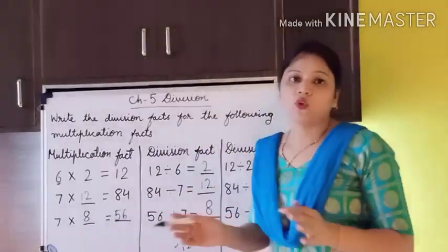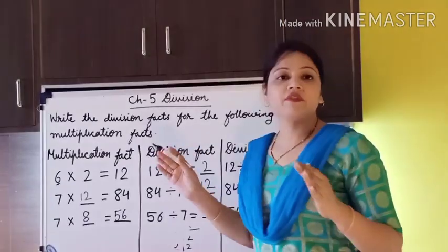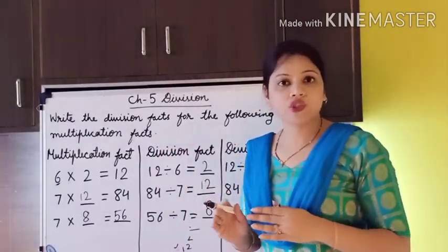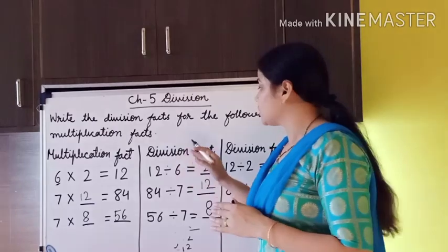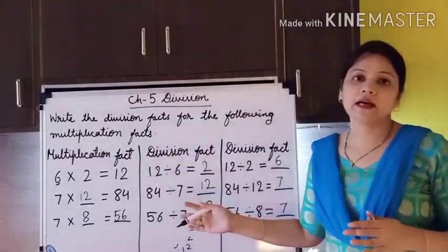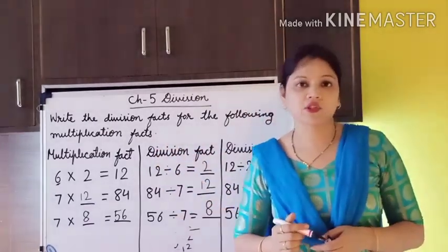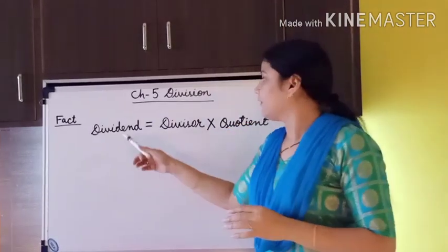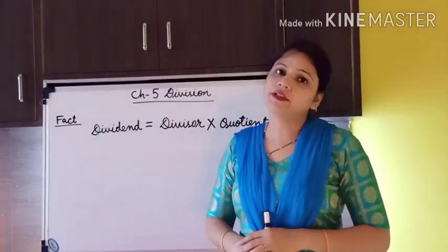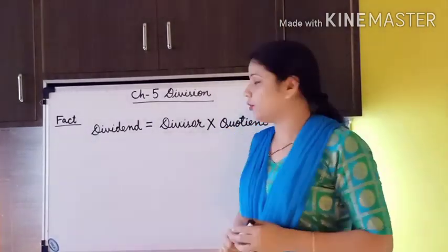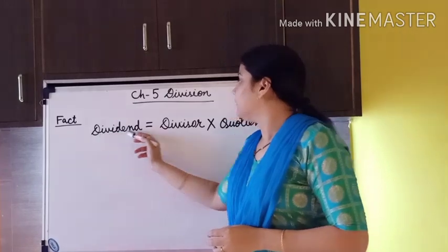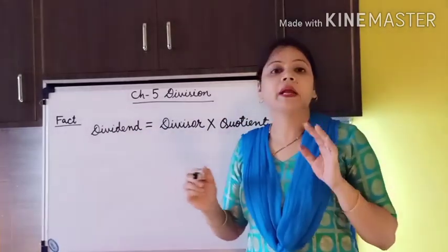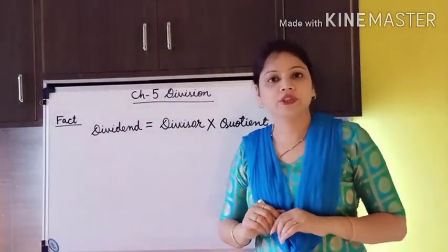I hope the relationship between division and multiplication is clear to you. Pause this video and write these examples in your maths notebook. Here is another important fact: dividend is equal to divisor multiplied by quotient.